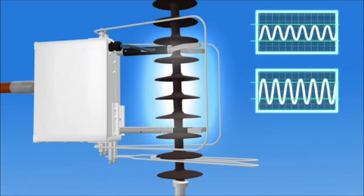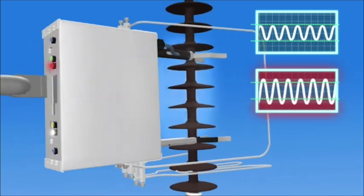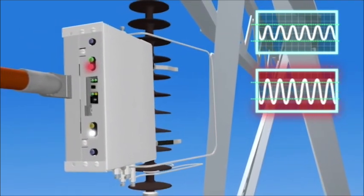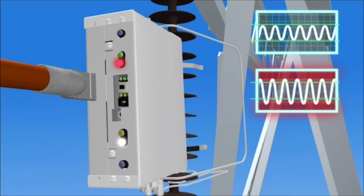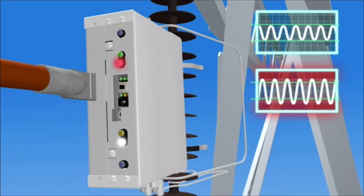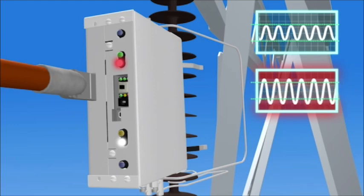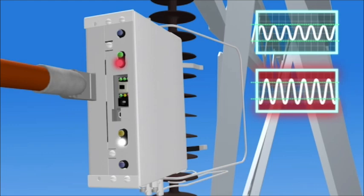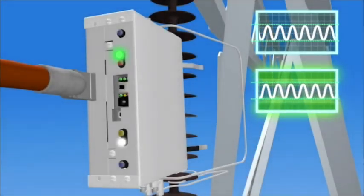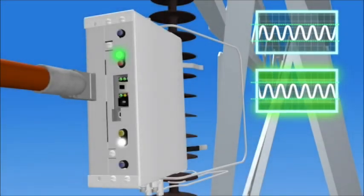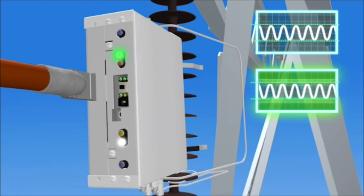If the measurements are out of range of the initial calibration, a red LED and associated tone communicates to the user that the section of the insulator being tested potentially has low electrical integrity. A green LED and associated tone communicates that no electrical defect has been found.